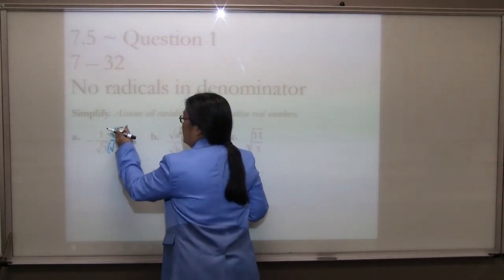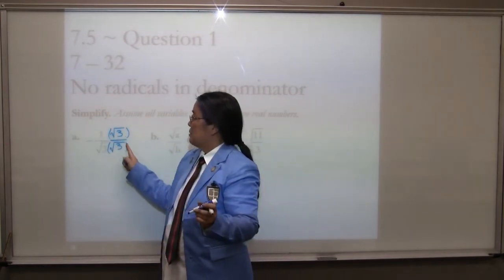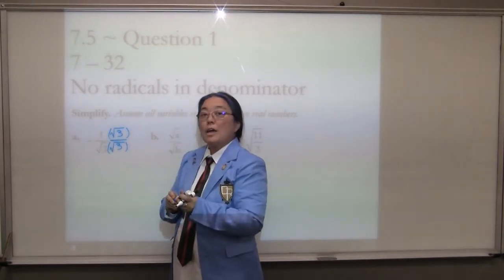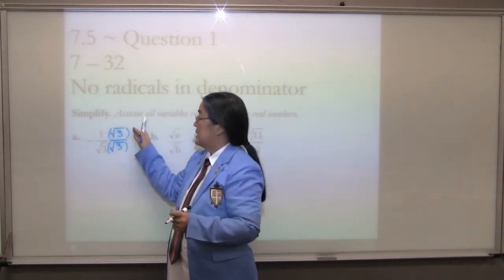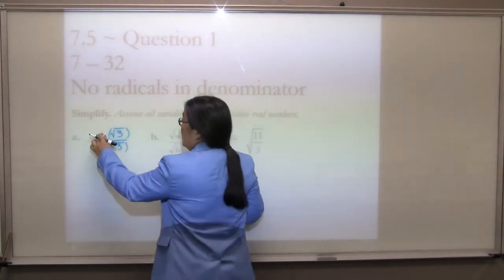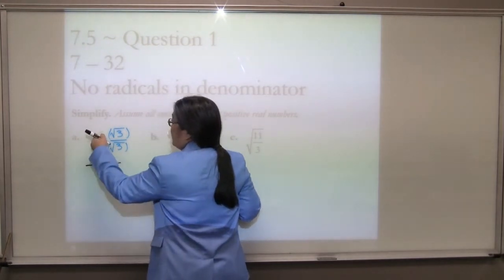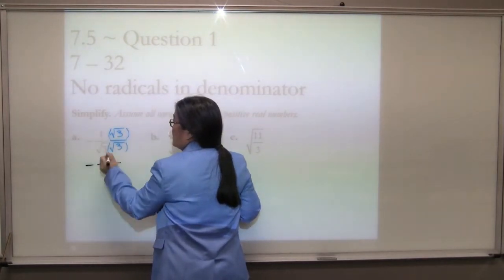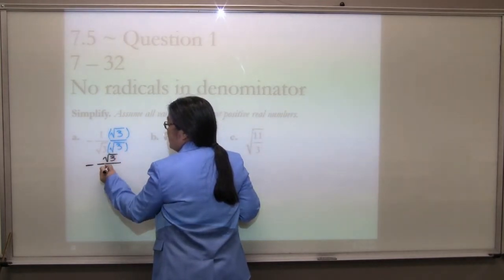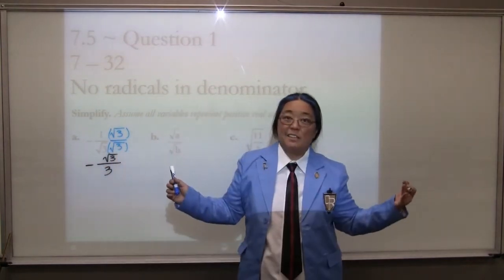Why did we do that? That is because this is secretly something divided by itself, which is 1. And from chapter 1, the multiplicative identity says that multiplied by 1, nobody really cares. So over here, we have negative. On the top, 1 times the square root of 3 is the square root of 3. On the bottom, I have a pair of 3's inside — it comes outside once. Done.